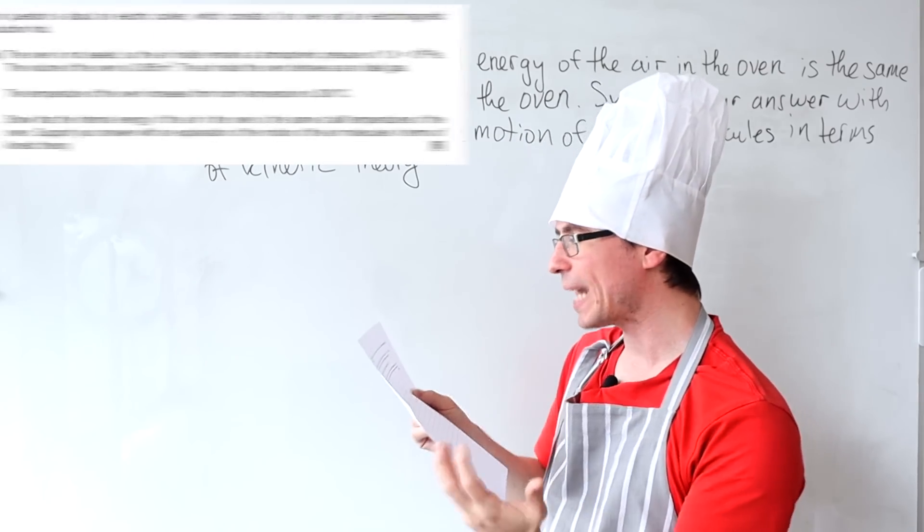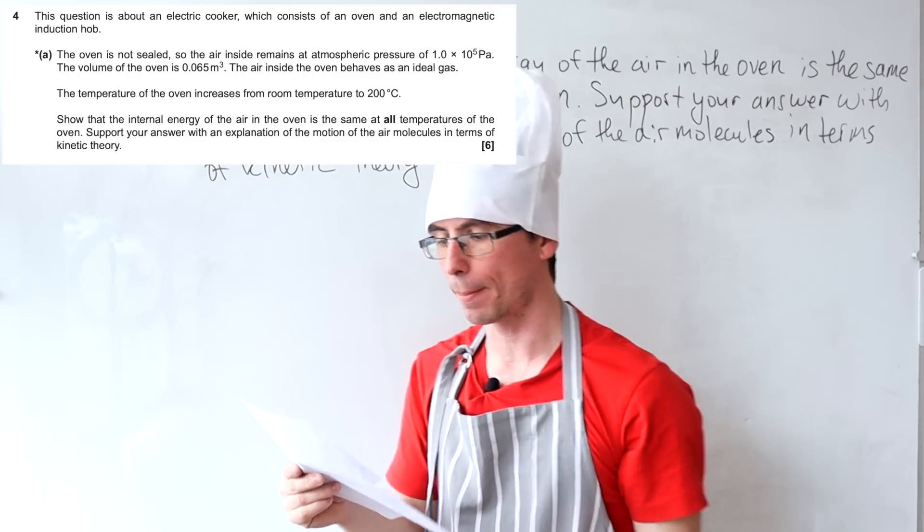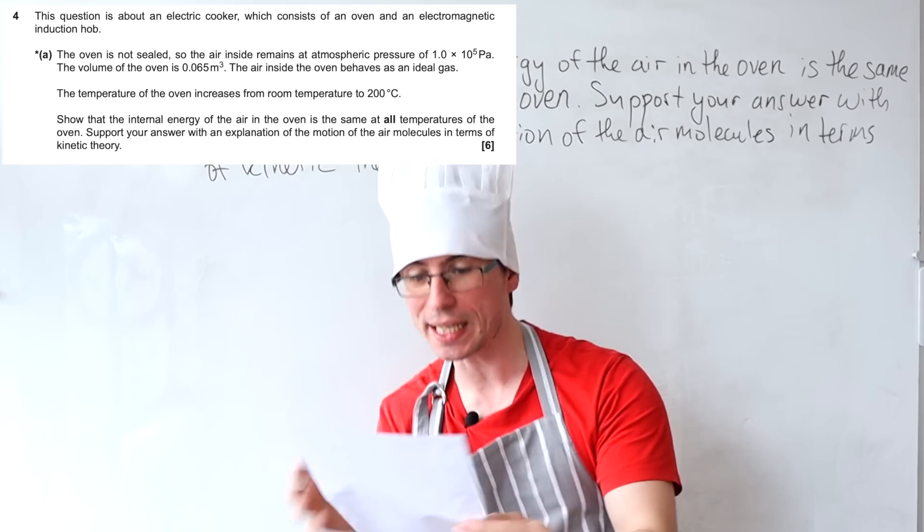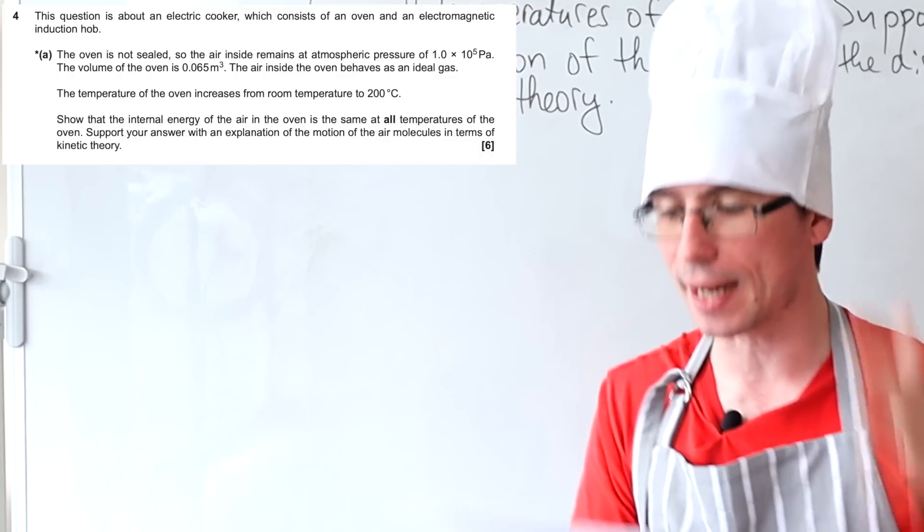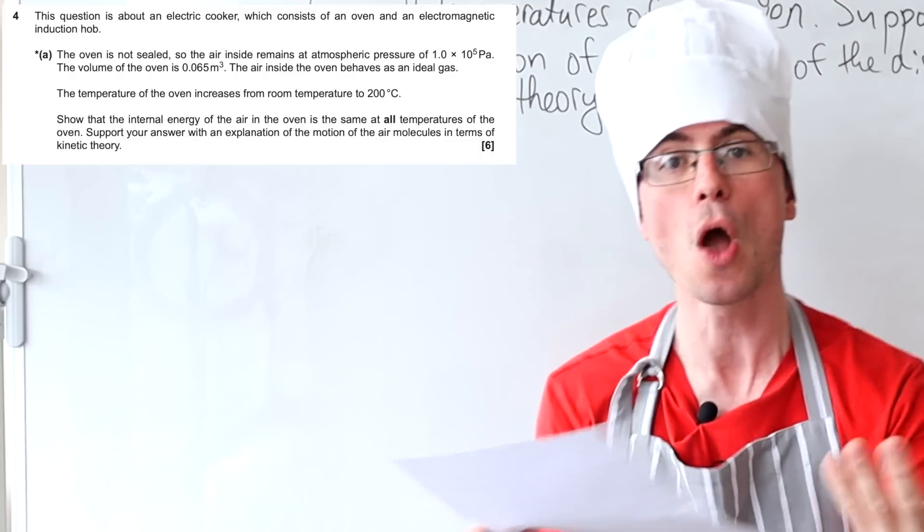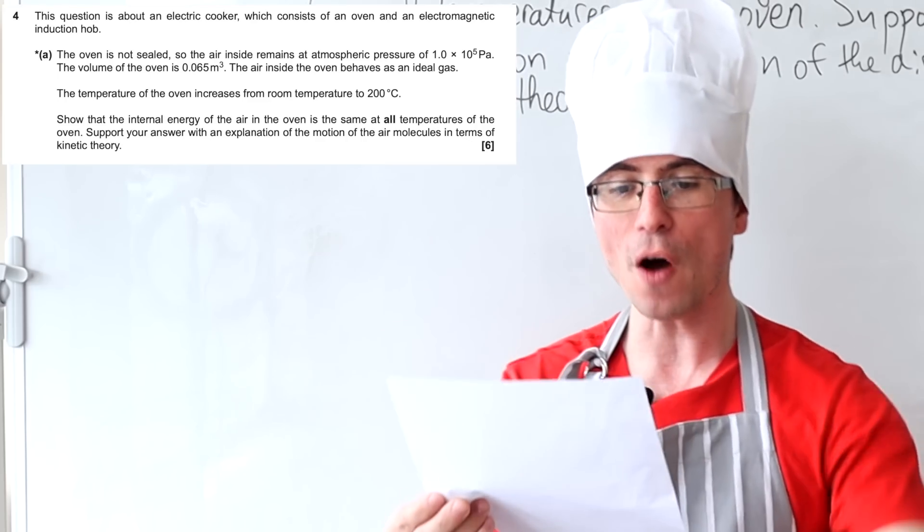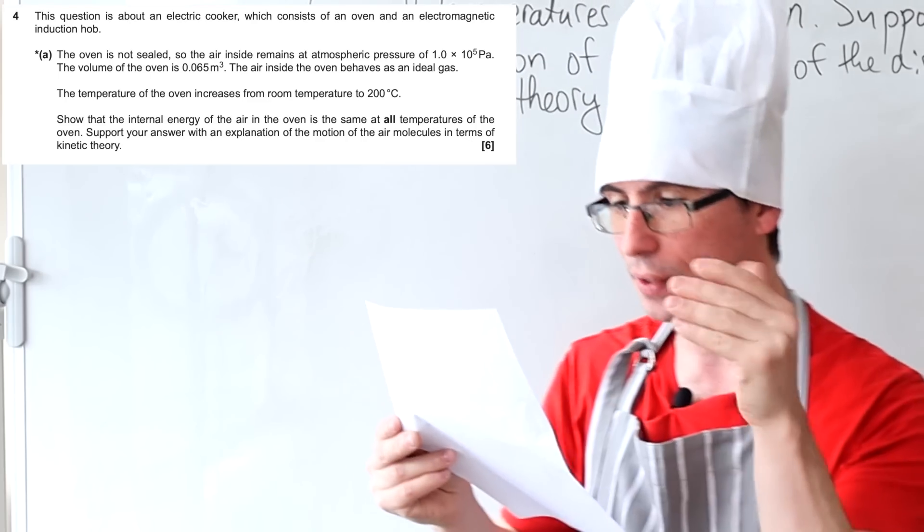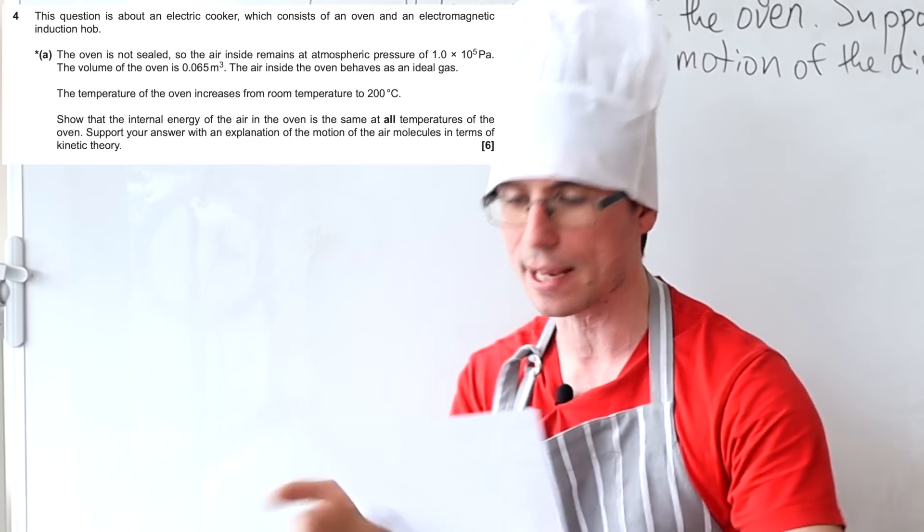Okay, so this question is about an electric cooker which consists of an oven and an EM induction hub. The oven is not sealed, good thing, so the air inside remains at an atmospheric pressure of around 1.0 times 10 to the 5 pascals. The volume of the oven is given, the air inside the oven behaves as an ideal gas.